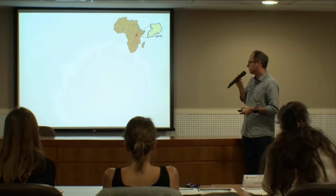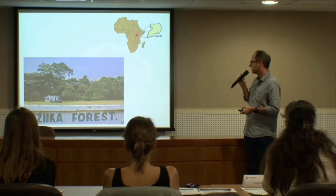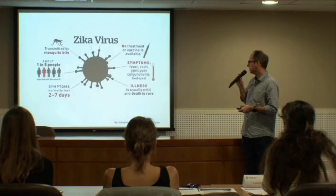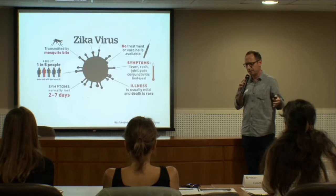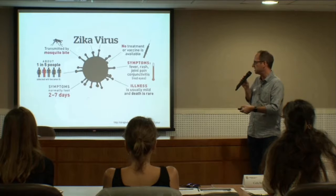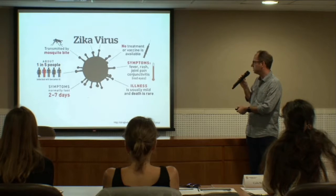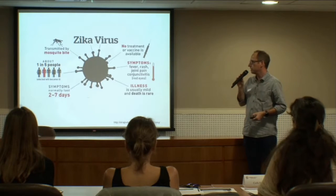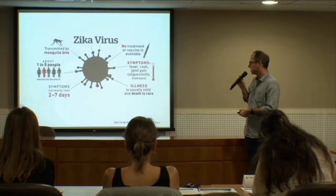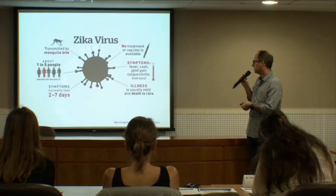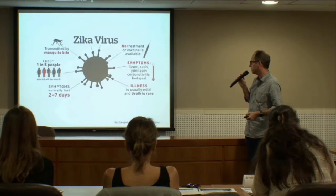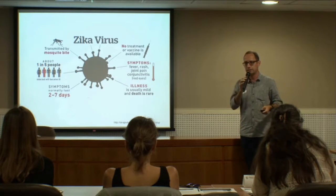Zika virus started in a forest called Zika in Uganda, which is why it is named the Zika virus. From 1947 until 2007, it was considered a mild disease — only one in every five infected people got sick, with symptoms lasting two to seven days. There was no treatment, but it caused no major issue: just fever, rash, and some joint pain.